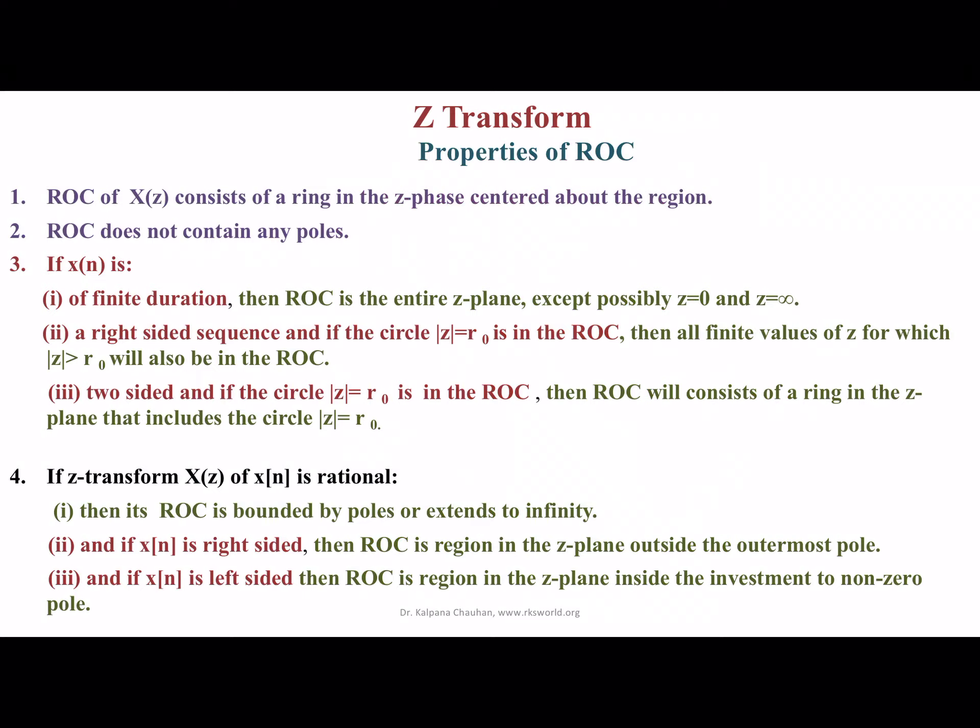If X(n) is two-sided and the circle |Z| = R₀ is in the ROC, then the ROC will consist of a ring in the Z-plane that includes the circle |Z| = R₀. If the Z-transform X(z) of X(n) is rational, then the ROC is bounded by poles or X tends to infinity. If X(n) is right-sided and X(z) is rational, the ROC is the region outside the outermost pole. If X(n) is left-sided and X(z) is rational, the ROC is the region inside the innermost non-zero pole.